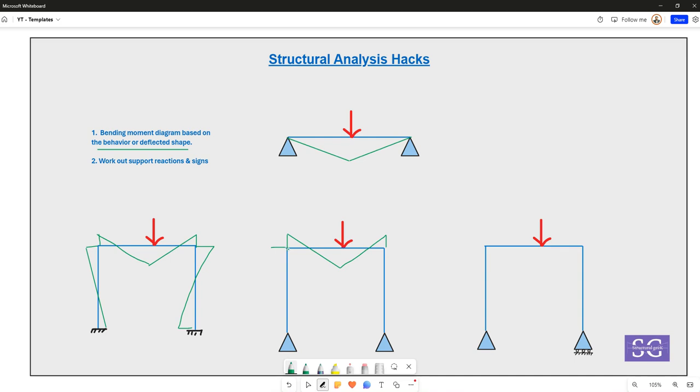But now as this particular moment tries to go through the column, it will eventually reduce to a zero value rather than going to a negative value or another direction value because we don't have fixity at this place. Similarly for this particular column.